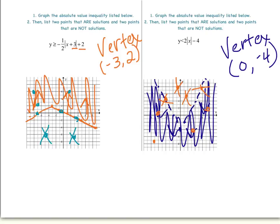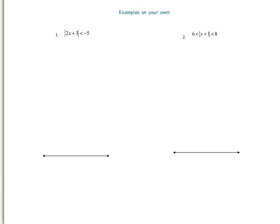Now let's look at two more examples. In our first example here, we have an absolute value that is less than a negative number. If you remember from the first part of these notes, if you have an absolute value that is less than a negative number, your answer will always be no solution — because your absolute value can never be less than a negative number.